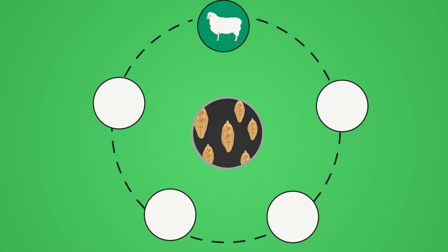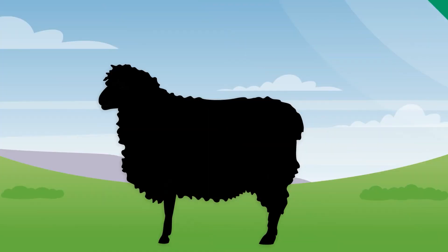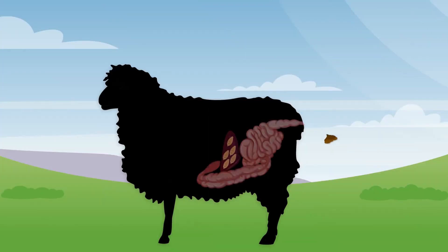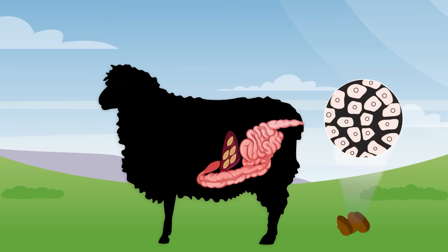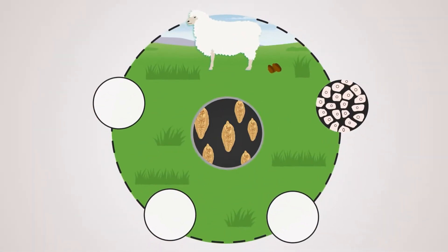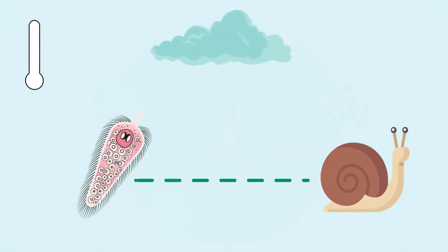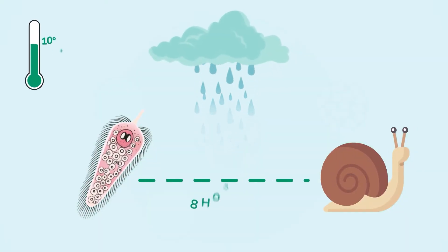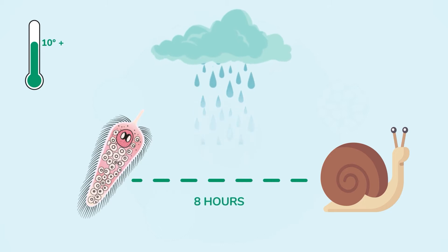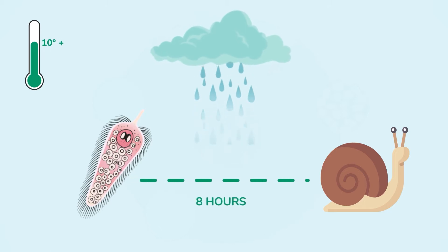Adult liver fluke live in the bile ducts of infected livestock. They lay eggs which are passed out in the feces. When weather conditions are suitable — warm and wet — the liver fluke eggs hatch and the little larvae called Myracidia have approximately eight hours to find their intermediate host, the mud snail.